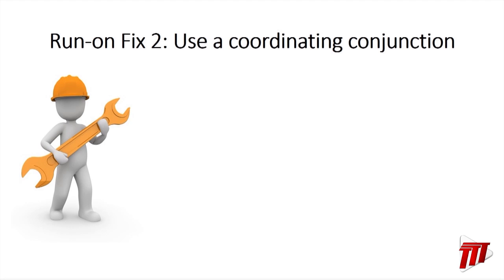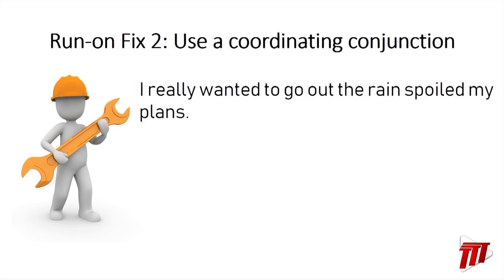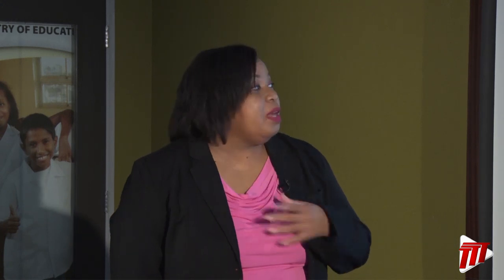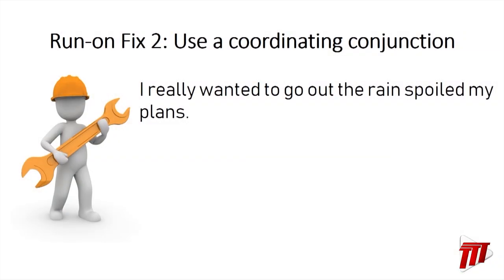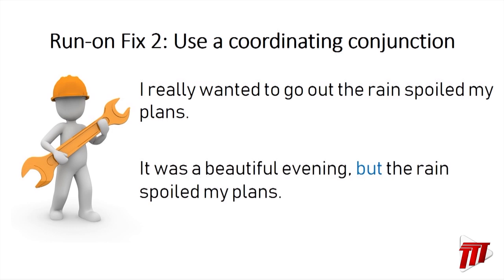In addition to using full stops, we can use a coordinating conjunction to fix run-on sentences. Here's an example: "I really wanted to go out the rain spoiled my plans." Notice I couldn't even catch a breath there — two independent clauses that need to be joined properly. The fix: "I really wanted to go out, but the rain spoiled my plans." Here we have a run-on sentence fixed with the coordinating conjunction "but."